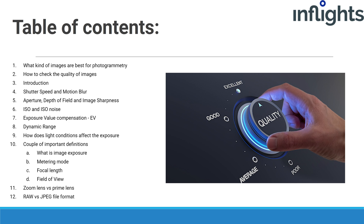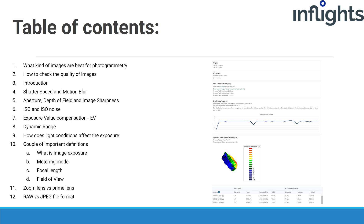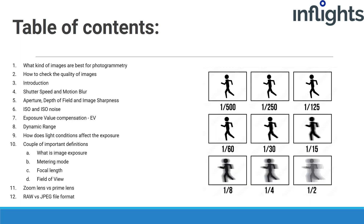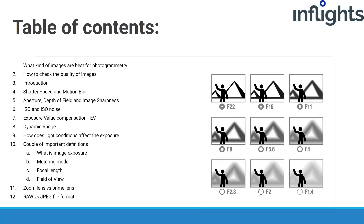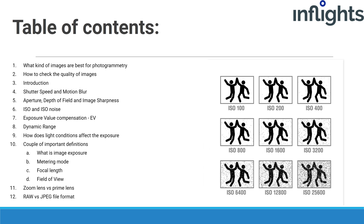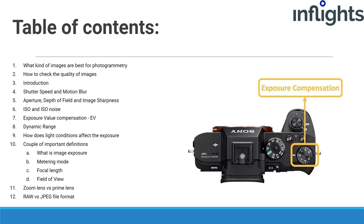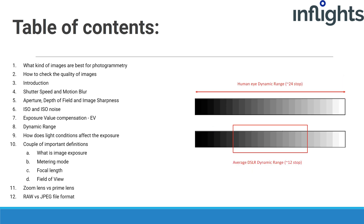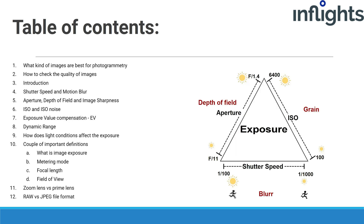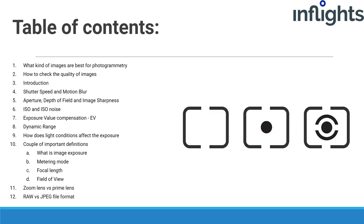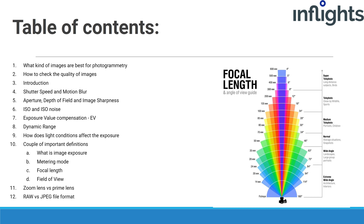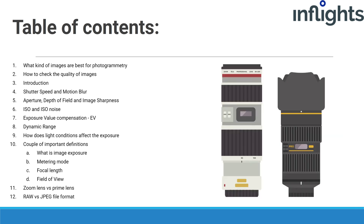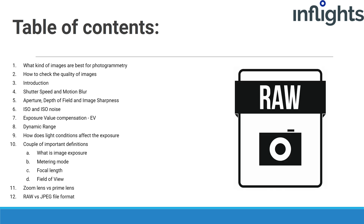What kind of images are best for photogrammetry? How to check the quality of images, shutter speed and motion blur, aperture, depth of field and image sharpness, ISO and ISO noise, exposure value compensation, dynamic range in photography, how light conditions affect the exposure, important definitions including image exposure, metering mode, focal length and field of view, zoom lenses versus prime lenses, and raw versus JPEG file formats.